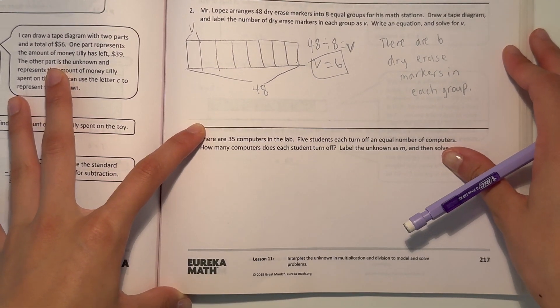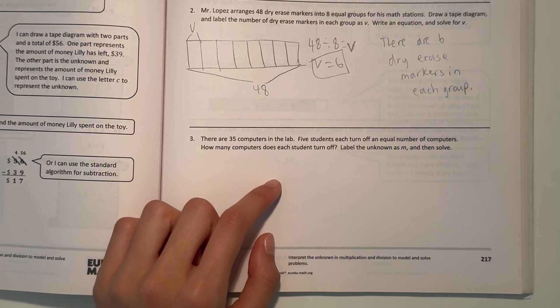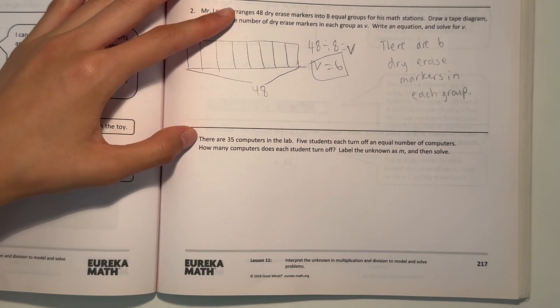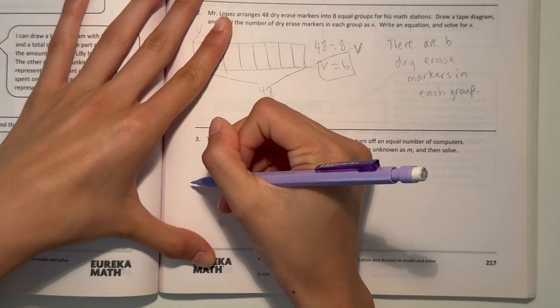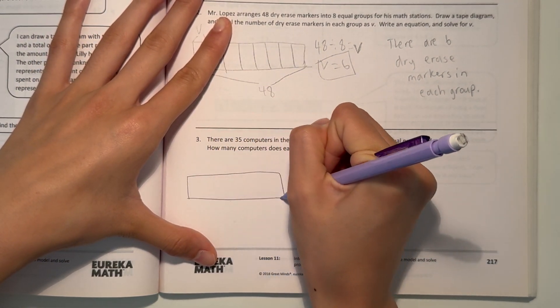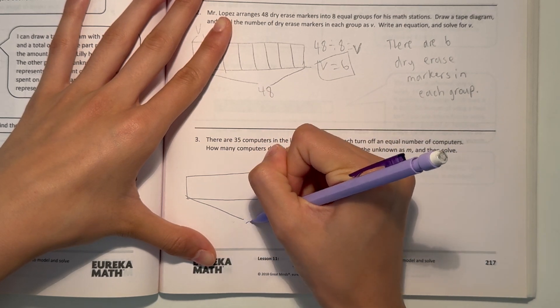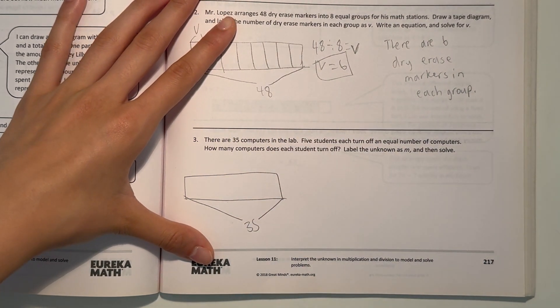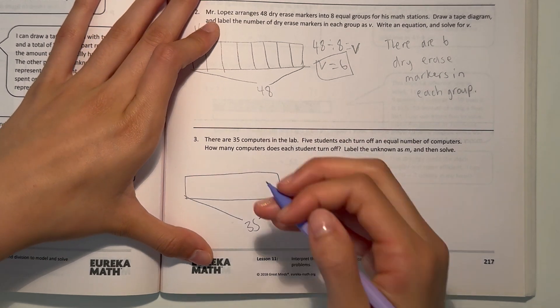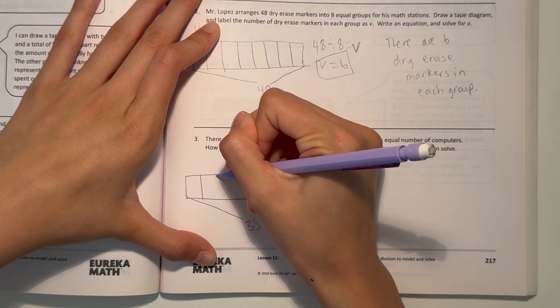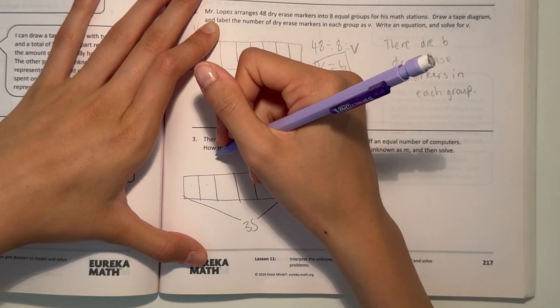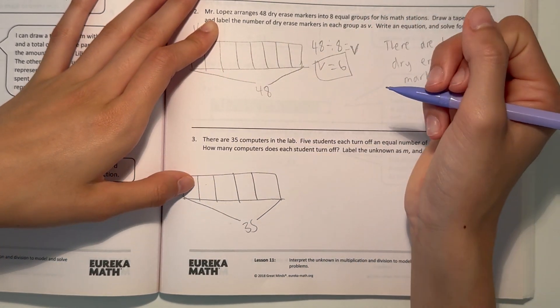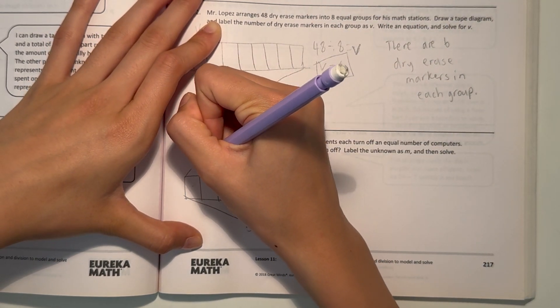There are 35 computers in the lab. 5 students each turn off an equal number of computers. How many computers does each student turn off? Label the unknown as M and then solve. Alright, so our total is 35 computers, and 5 students each turn off equal number of computers. 1, 2, 3, 4, 5.